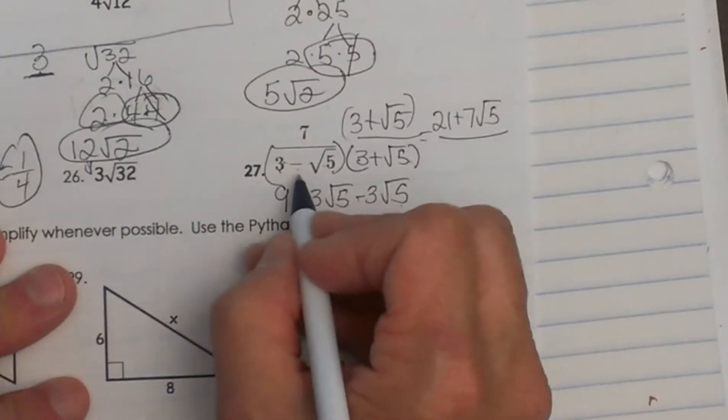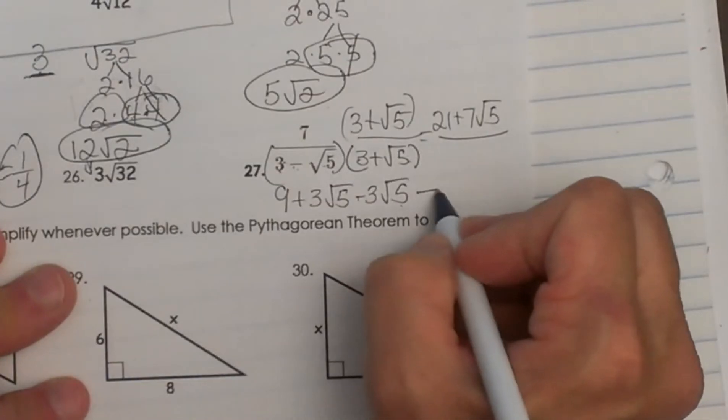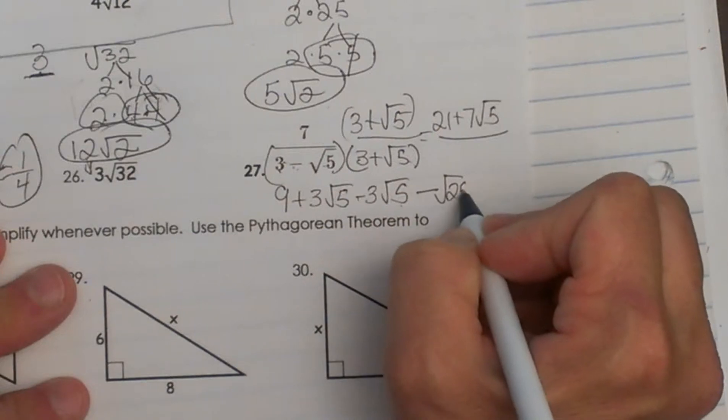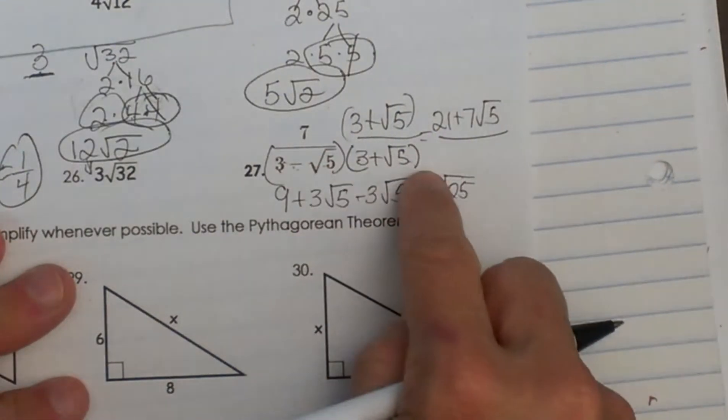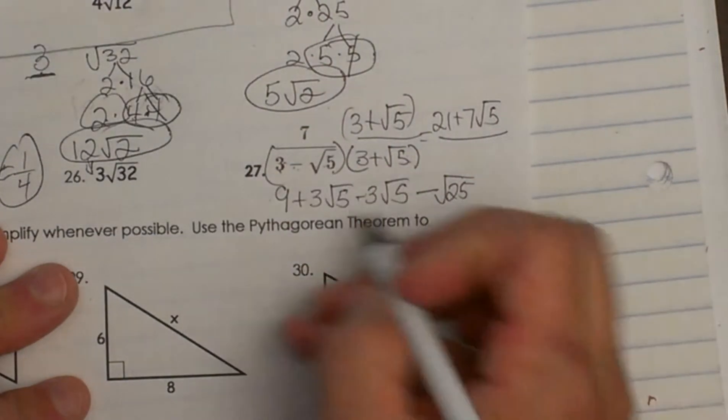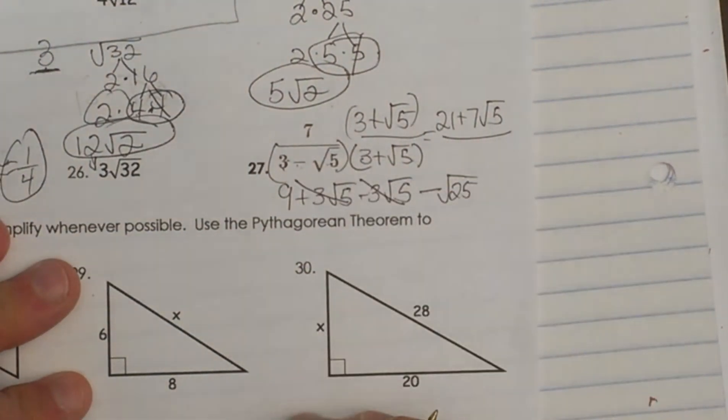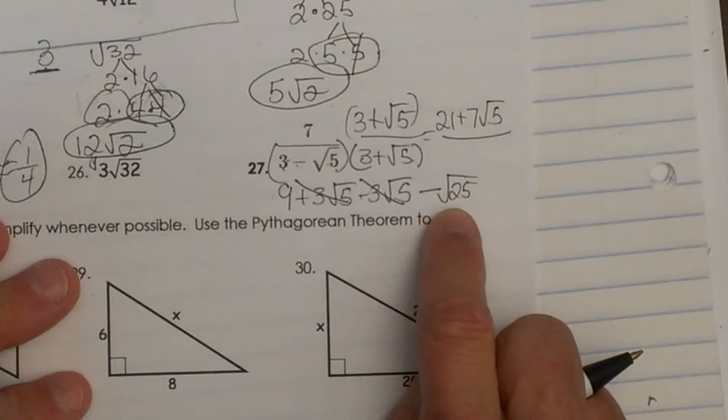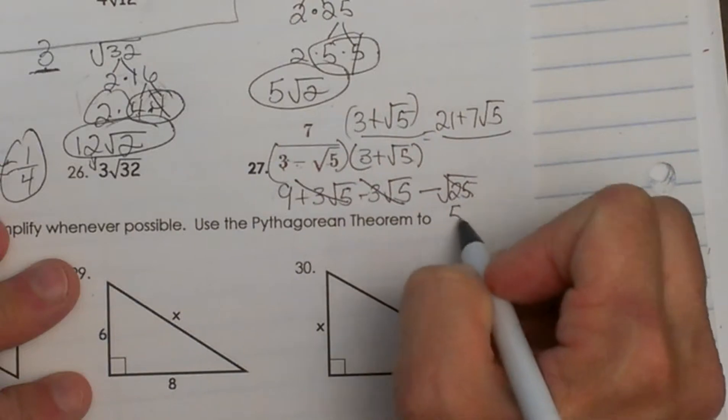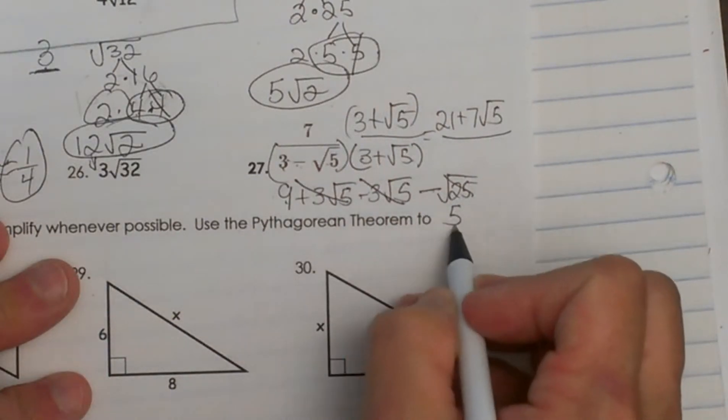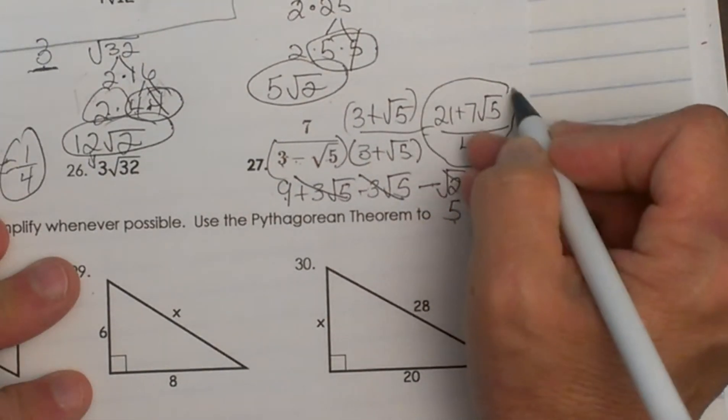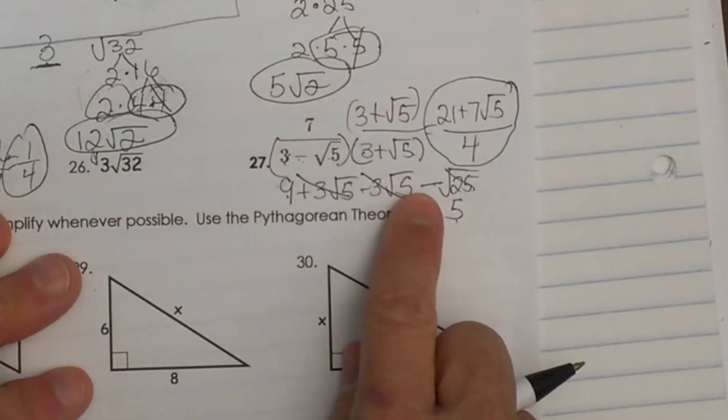And then the last one for the FOIL is negative times a positive, which is negative square root of 5 times the square root of 5 is square root of 25, because the rule is inside times inside. Now let's clean this up. Notice what happens here. Our two middle terms disappear, and then that square root simplifies to a nice whole number. So the square root of 25 is just 5, so we have 9 minus 5, so we end up with 4 in the denominator, which is beautiful because we no longer have a radical. So that's the purpose of multiplying by a conjugate.